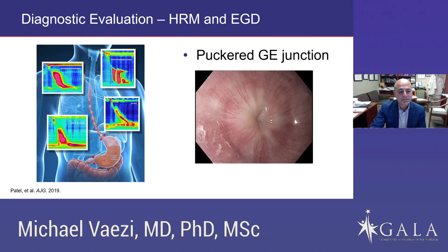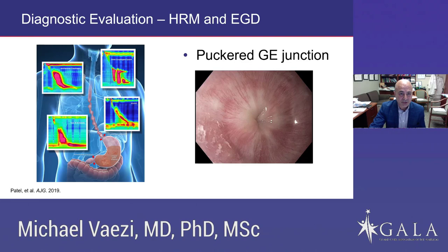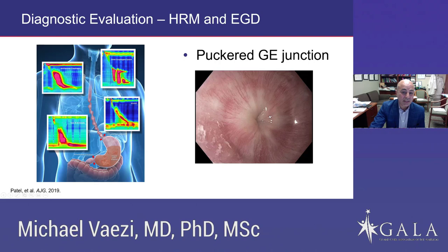This endoscopic picture shows retained saliva and a puckered GE junction — classic for achalasia. However, this patient had dysphagia to solids and liquids with this endoscopic finding, but this is not idiopathic achalasia. This is opioid-induced. The patient was on chronic opioids, and when we transitioned the patient to a partial agonist, the symptoms did improve, as did the motility findings. This endoscopy picture demonstrates that endoscopically and symptom-wise, opioid-induced disease can be very similar to idiopathic achalasia.